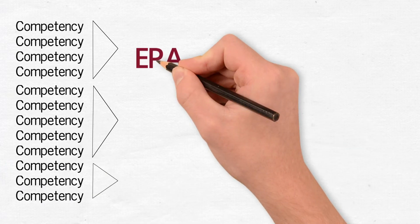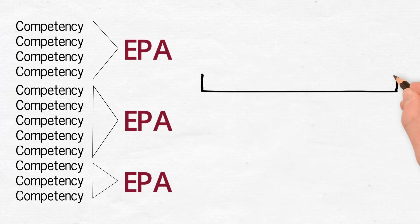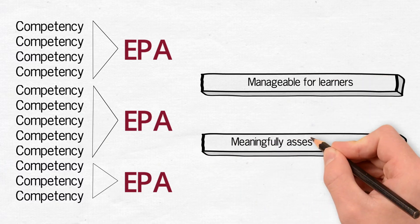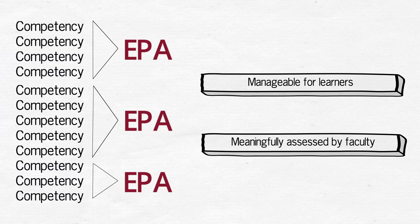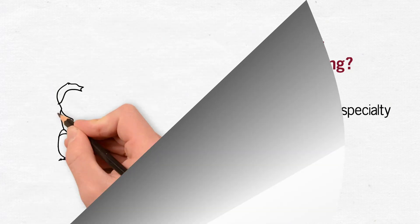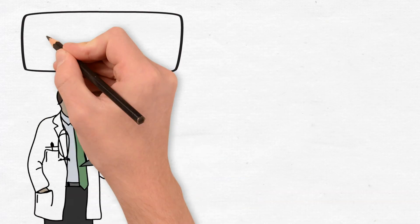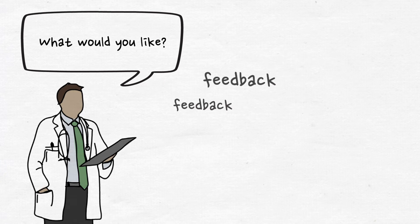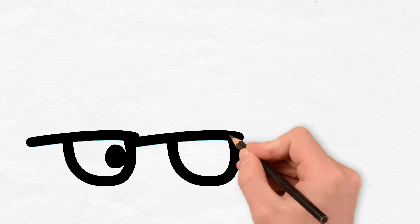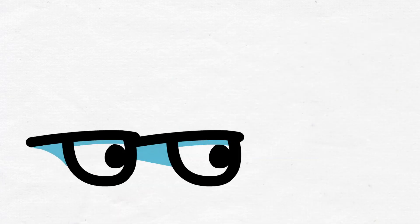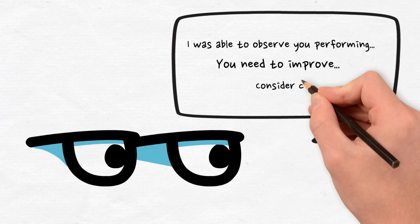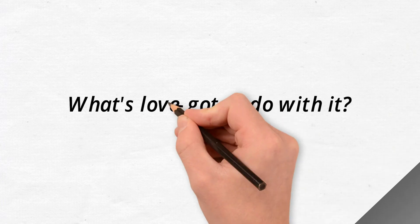An EPA represents the integration of a large number of competencies into a manageable number of activities for learners. They also enable supervising faculty to meaningfully assess during the training program. The second reason is for feedback. For years, learners have been telling us they want more meaningful and helpful feedback. Feedback is one of the most effective ways to support a resident's growth and development. The most specific and meaningful feedback is based on what is directly observed — directly observing a specific EPA task and providing meaningful feedback about it. So what's trust got to do with it?